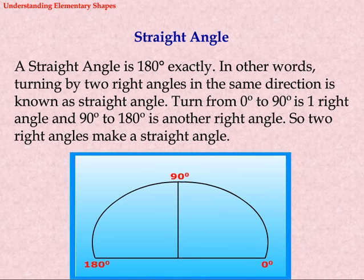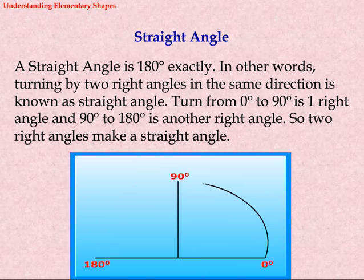Straight angle: A straight angle is exactly 180 degrees. In other words, turning by two right angles in the same direction is known as a straight angle. A turn from 0 degrees to 90 degrees is one right angle, and 90 degrees to 180 degrees is another right angle. So two right angles make a straight angle.